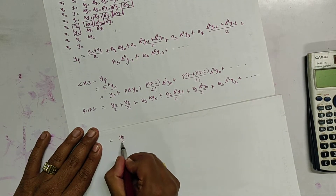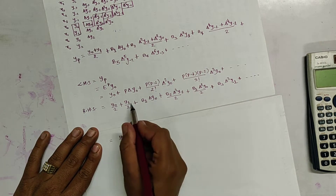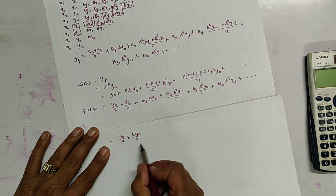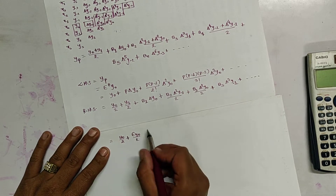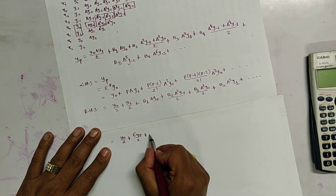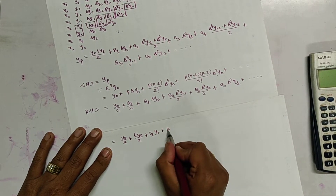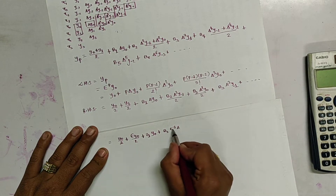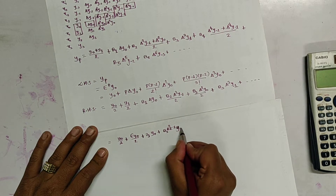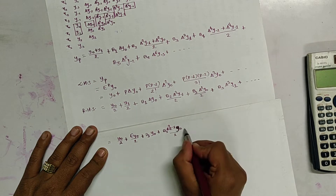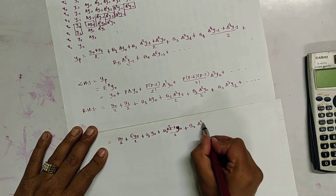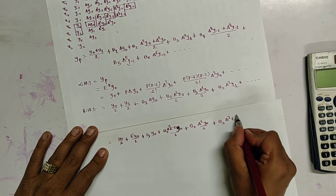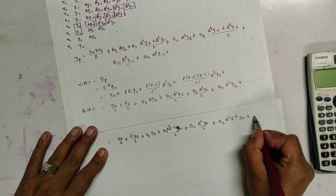RHS becomes y-naught by 2 plus y1 — let us shift it backward, that means e times y-naught by 2 using the shifting operator (see the previous video if you don't understand) — plus b1 del y-naught, plus b2 del-squared e-power-minus-1 y-naught by 2, plus b3 del-cubed e-power-minus-1 y-naught, plus dot dot dot.